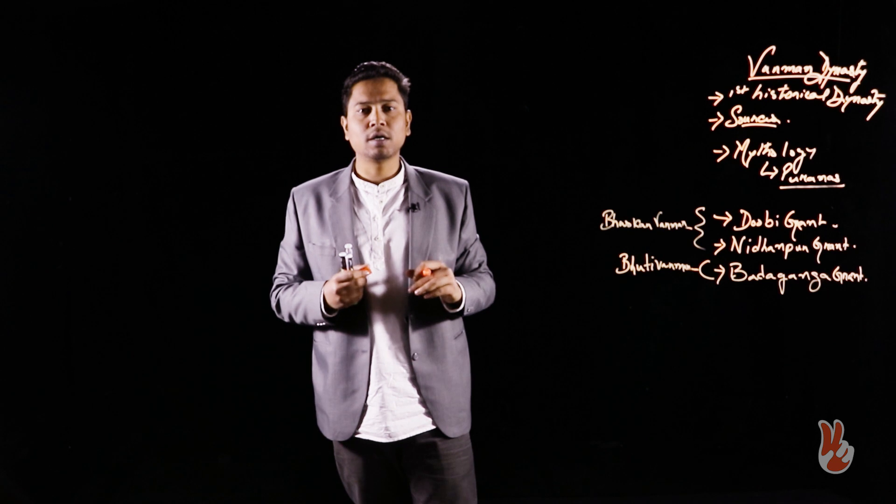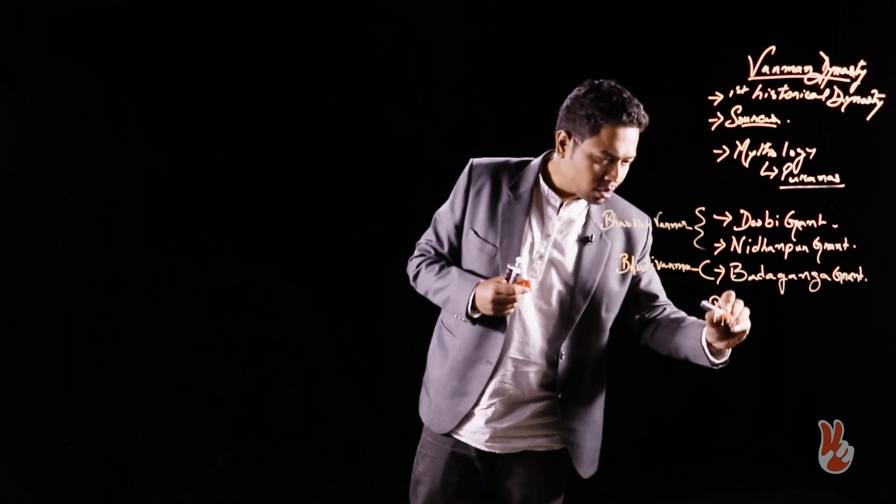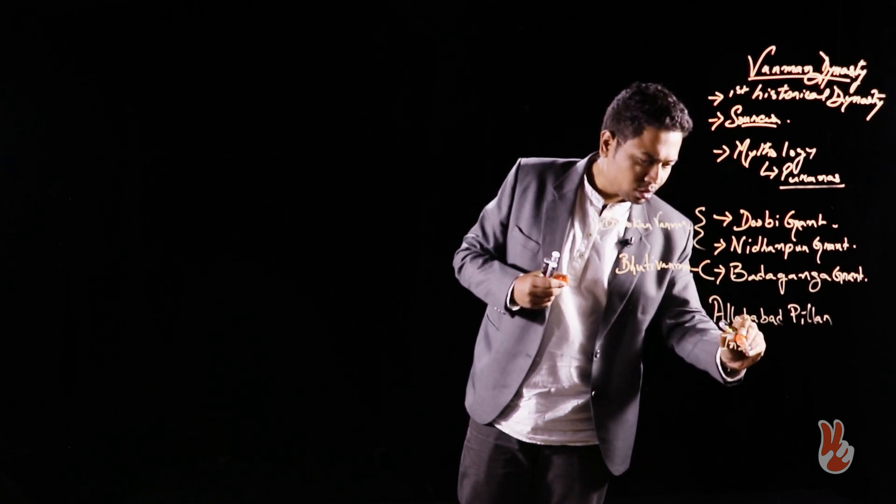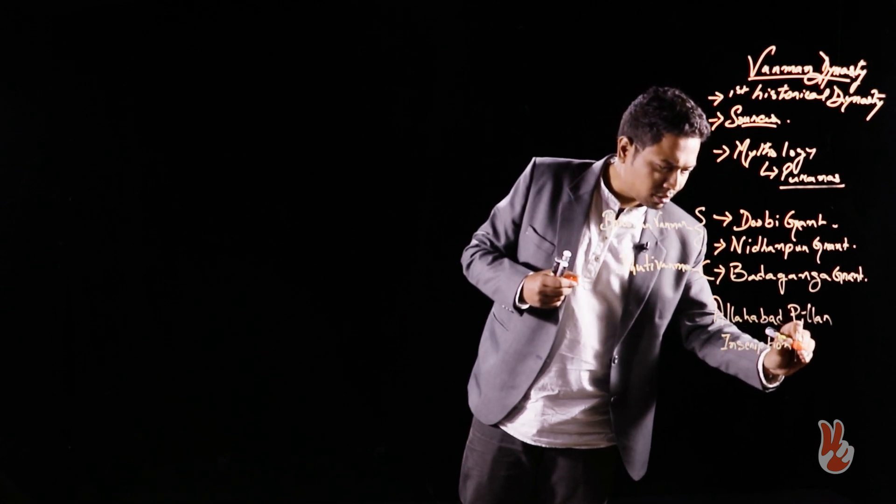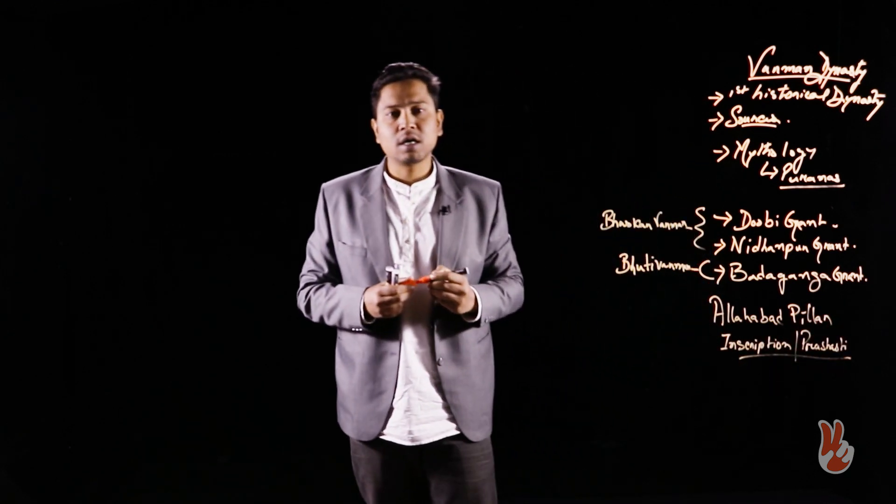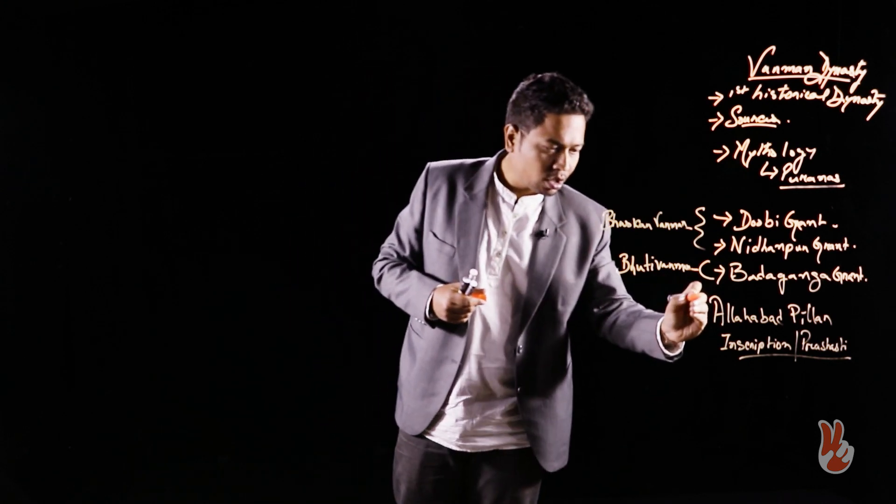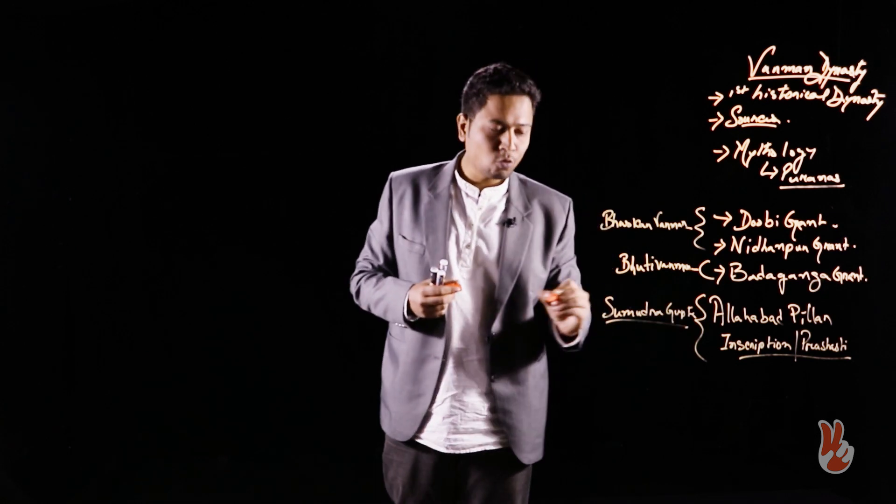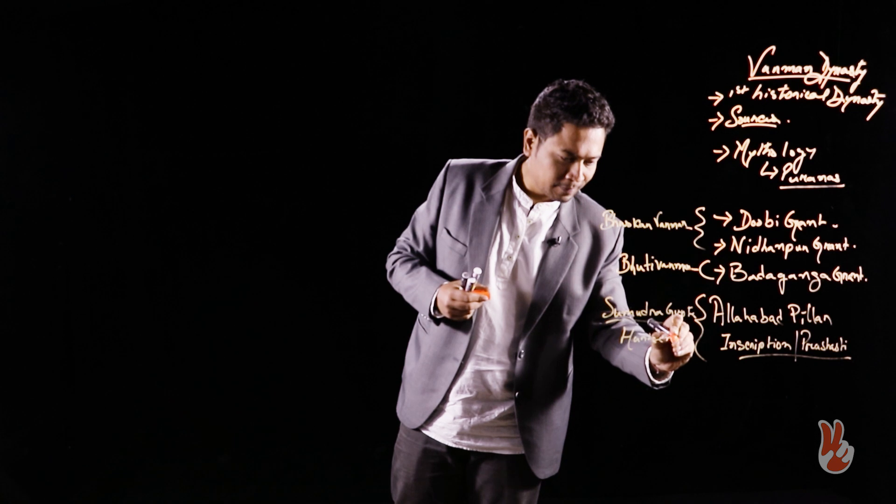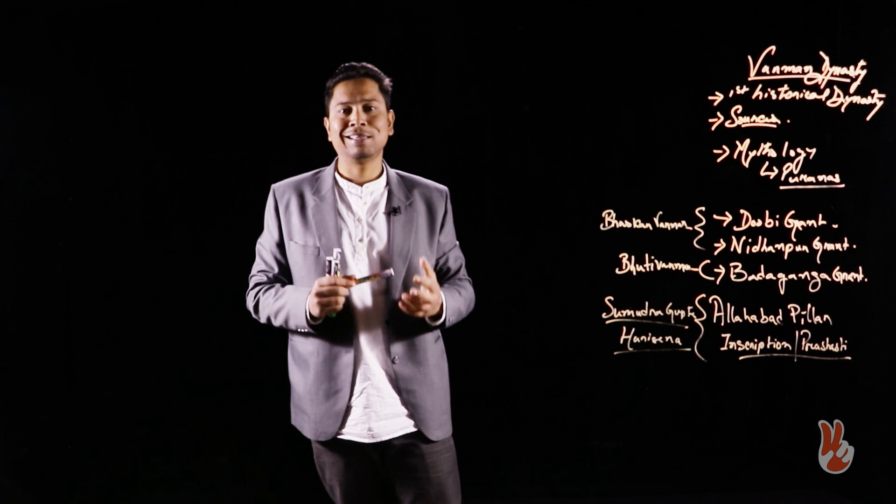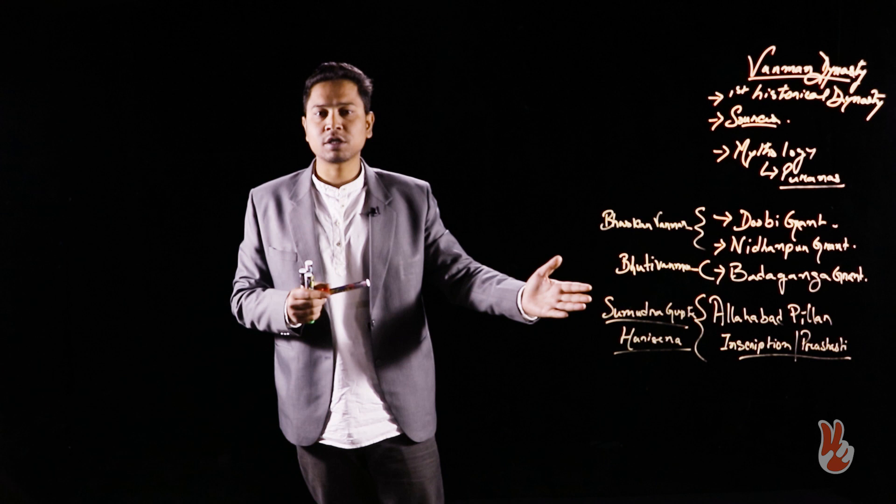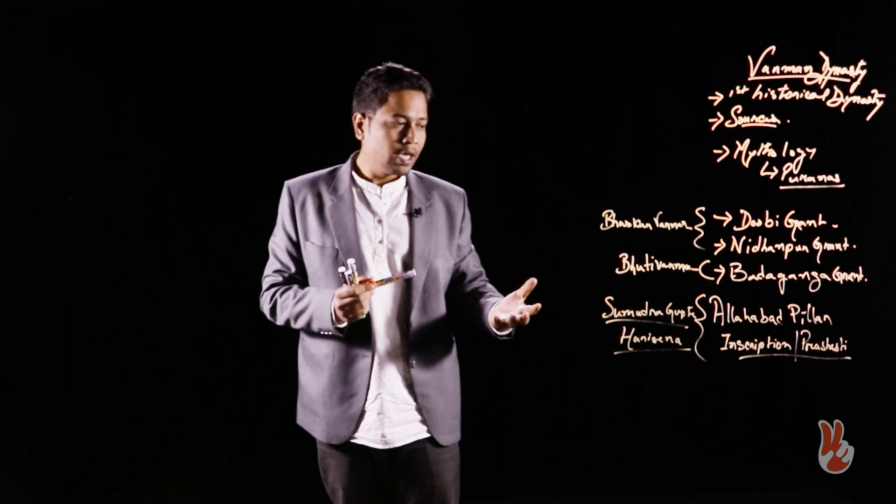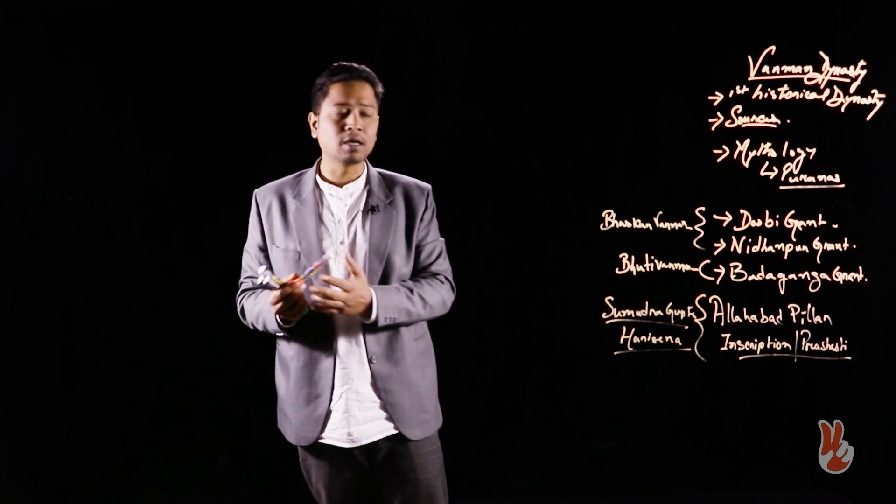We also get mention of the Northeast from the Allahabad Pillar Inscription, also known as Prasasti. It is an eulogic inscription about Samudra Gupta, the Great Gupta Ruler, composed by the court poet Harisena. It is inscribed upon an Ashokan Pillar now situated in Allahabad Fort. Here we get mention about various dynasties of the Northeast and various Northeastern kingdoms such as the Davaka Kingdom and the Pragyotisha Kingdom, from which we can make certain conjectures.